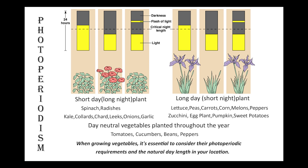7. Photoperiodism refers to how plants respond to the length of day and night. Some plants are long-day plants, meaning they require longer periods of daylight to flower, while others are short-day plants, which flower when days are shorter. Understanding the photoperiodic requirements of the vegetables you're growing can help with timing planting and flowering.